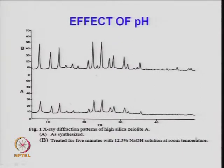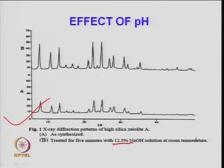A zeolite crystal which is synthesized with poor crystallinity shows some peaks indicating the compositions depending upon the zeolite material — silica alumina in the framework. When treated for 5 minutes with 12.5% NaOH, it provides hydroxyl ions in the zeolite and the degree of crystallinity has been improved. Post-synthesis treatment plays a very important role and is sometimes required to get better crystallinity.